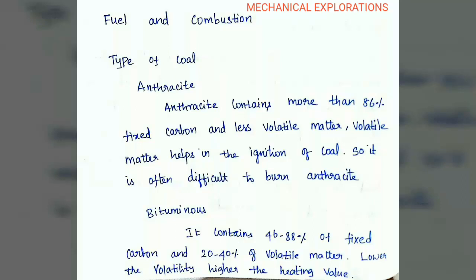First, coming to types of coal. It's anthracite. Anthracite contains more than 86% of fixed carbon and less volatile matter. Volatile matter helps in the ignition of coal, so it is often difficult to burn the anthracite.